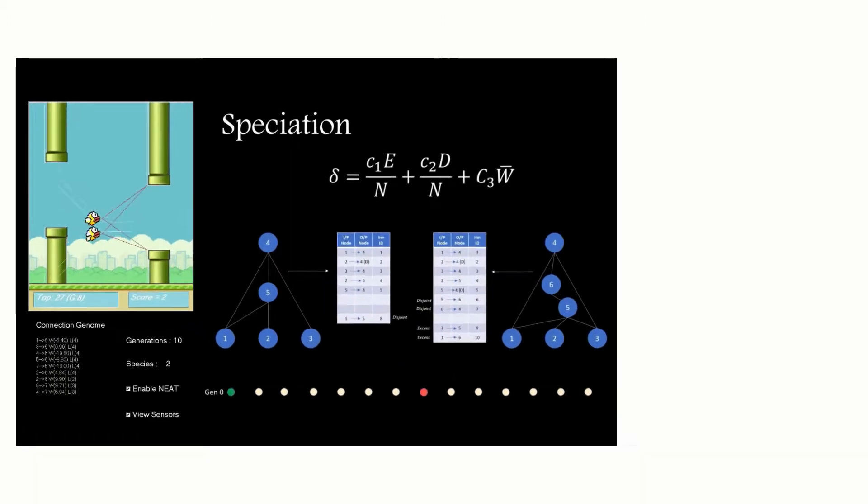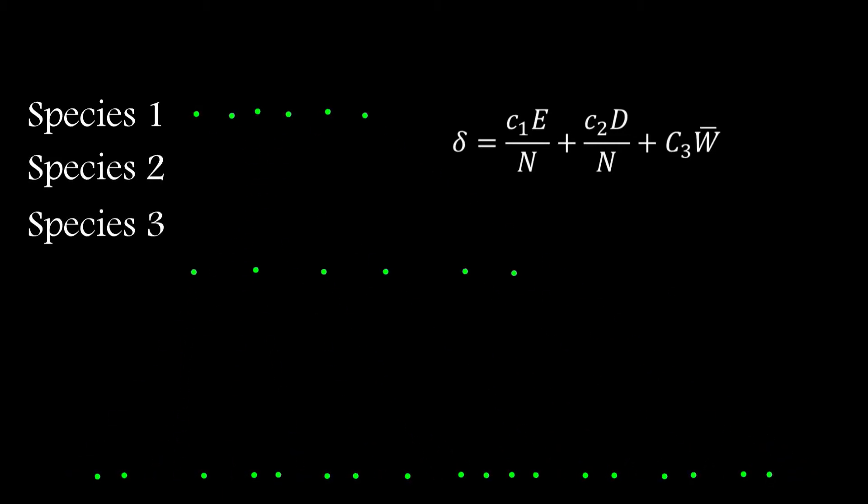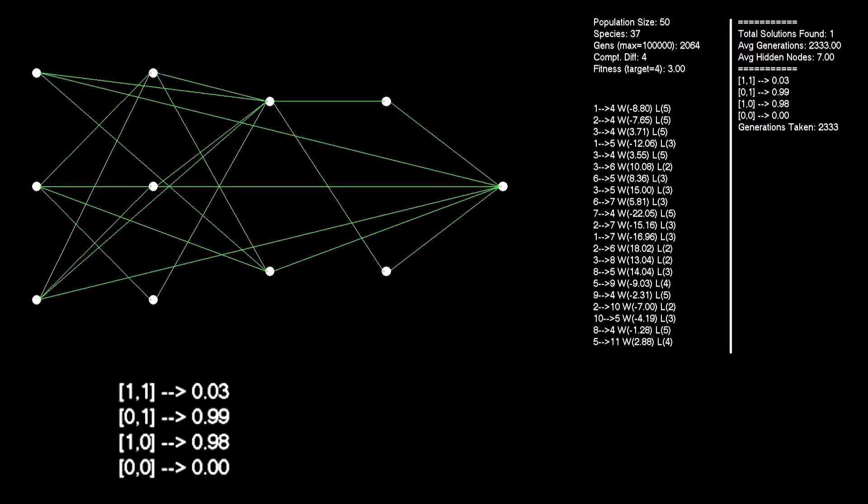Of course, if I scrub through the video to this point, you can see what it is: NEAT speciation. Speciation, of course, is a powerful ability of the NEAT approach which allows for multiple solutions to be explored in parallel. Networks are grouped by structural similarities with separation being governed by a threshold function.